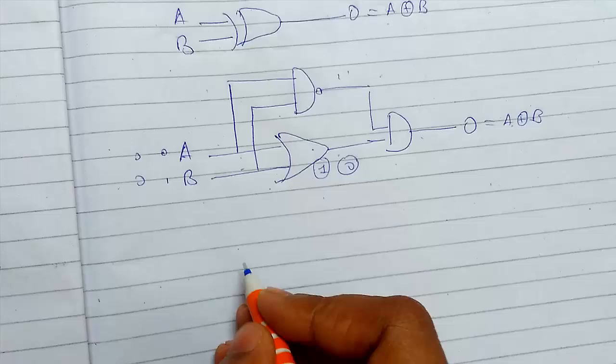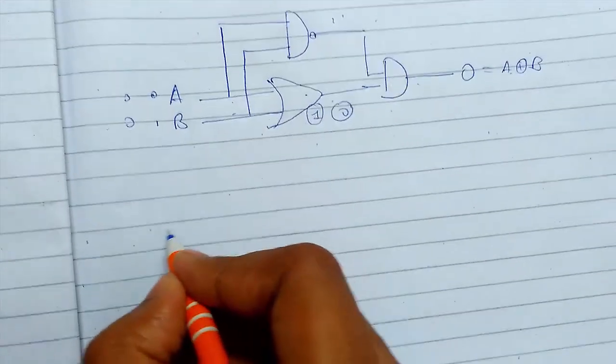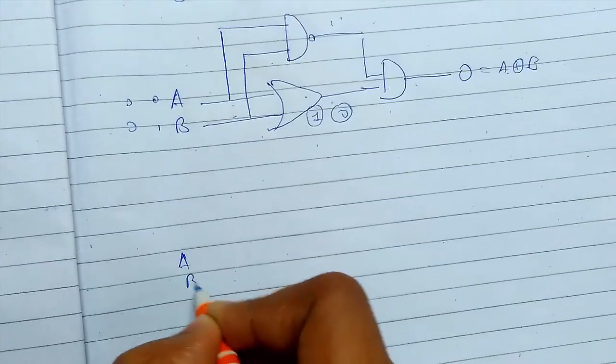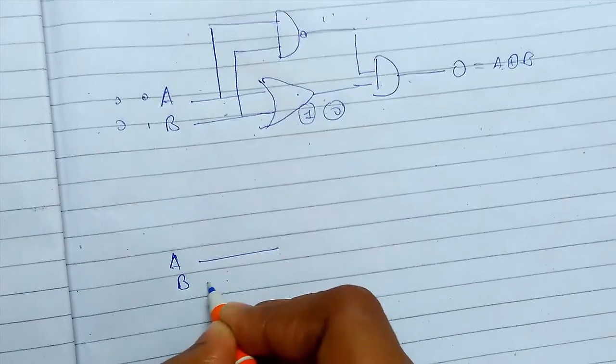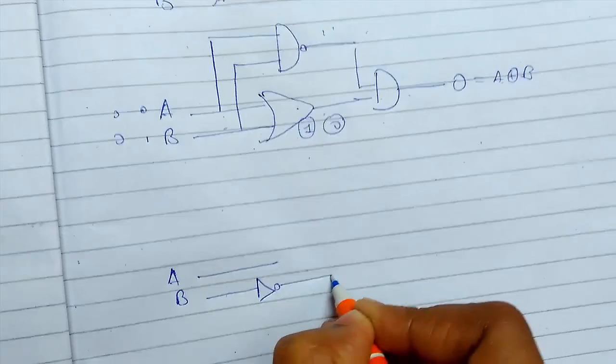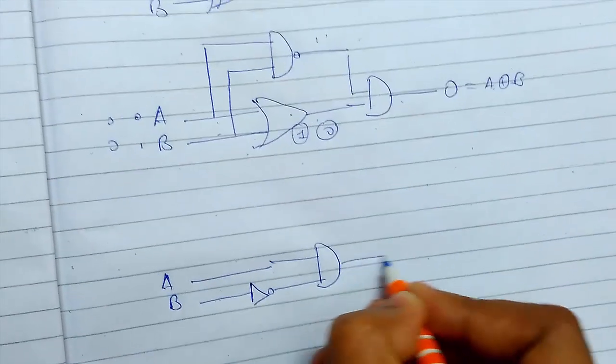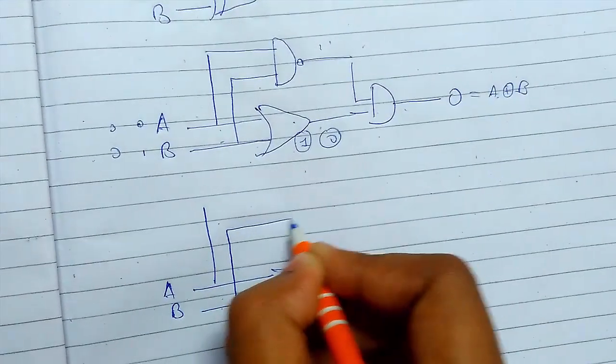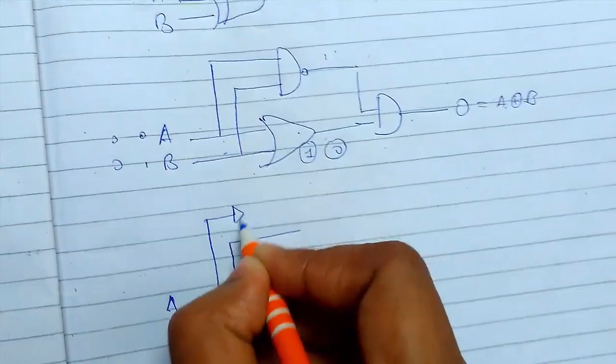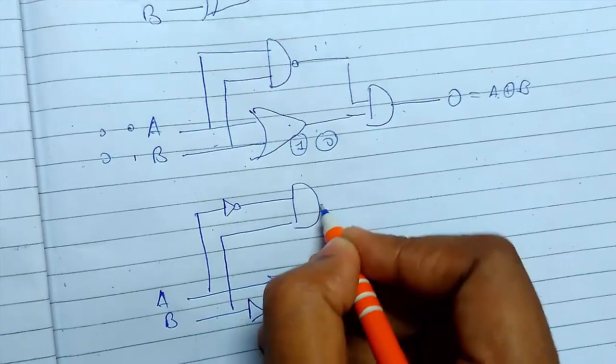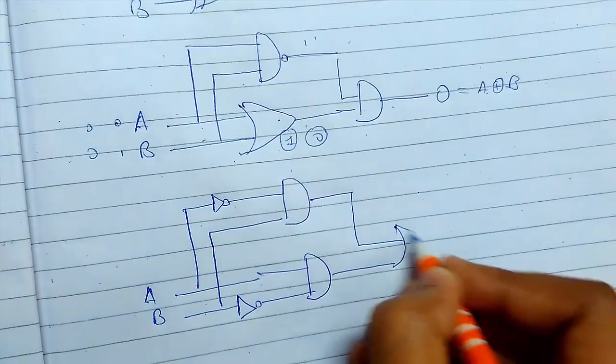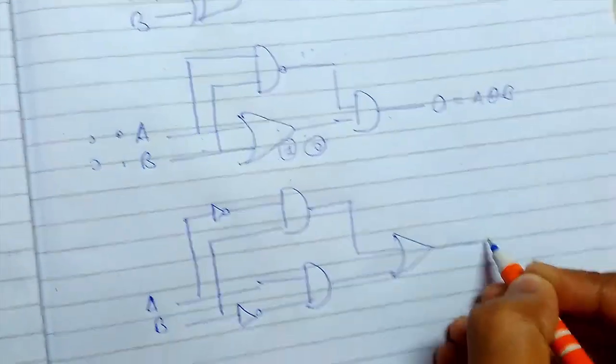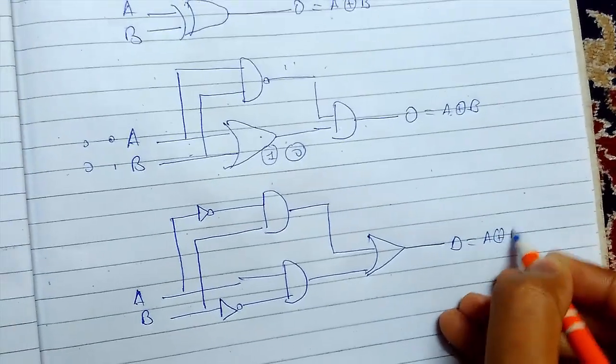The other circuit is from basic gates. It is like this - A, B. First we will pass B through a NOT gate. This is also the same. You can try this out by putting the values. The circuit is not that important, but the operation - understanding of the operation is important.